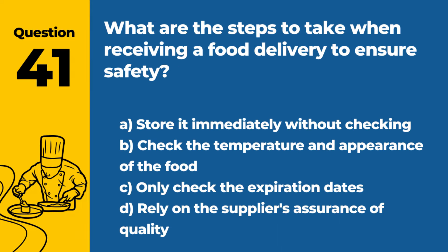Question 41. What are the steps to take when receiving a food delivery to ensure safety? a. Store it immediately without checking. b. Check the temperature and appearance of the food. c. Only check the expiration dates. d. Rely on the supplier's assurance of quality. Answer b. Check the temperature and appearance of the food. When receiving a food delivery, it's important to check the temperature and appearance of the food to ensure it hasn't been compromised during transit.